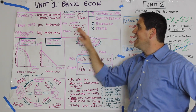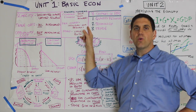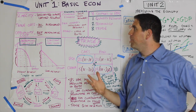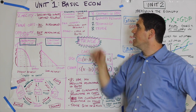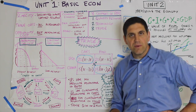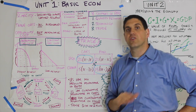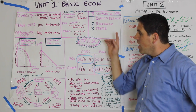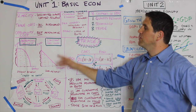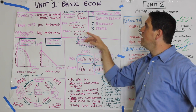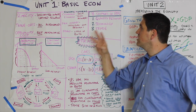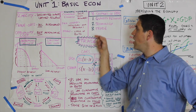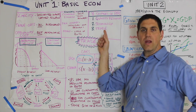In the free market, individuals own the resources and there is private property. In a command economy, the government owns the resources and there's no private property. The production possibilities curve also shifts. There are three things that shift the curve: quantity of resources, technology, and trade.